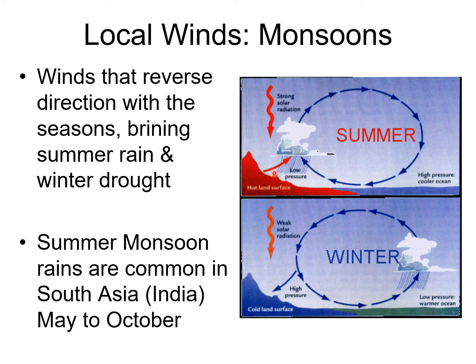The Indian subcontinent and much of Eurasia will warm up in the summertime because of the strong rays of the sun hitting around 23.5 degrees North latitude. The land heats up a lot faster and more extensively than does water. So the land heats up, the air above it heats up, and that air will rise. That's going to pull air in from the Indian Ocean. That air will warm, it will rise, it will release its water vapor content as water droplets, forming clouds and lots of rain.